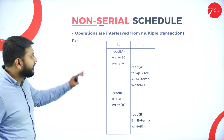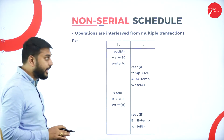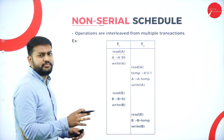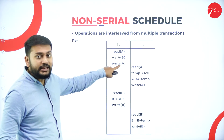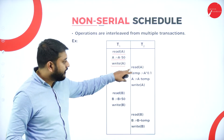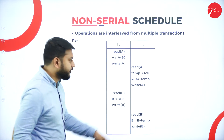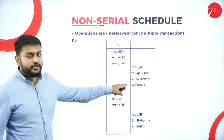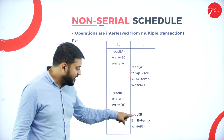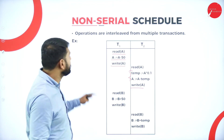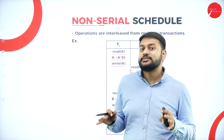Now, non-serial schedule. I'm reading A in transaction one, then performing some operation — A minus 50 — then write A. When we are performing write A, we are also performing read A in transaction two. I'm performing some operations and then write A. Again I have read B, performing something and writing B. In the same way, somebody else is reading. This is what I will call non-serial — there is no sequential execution of the transaction.